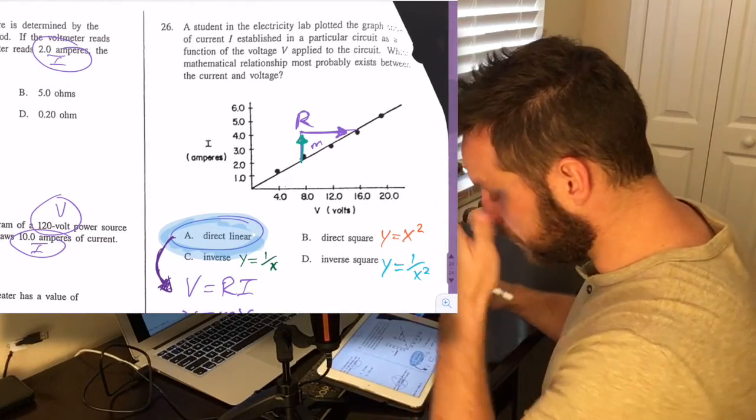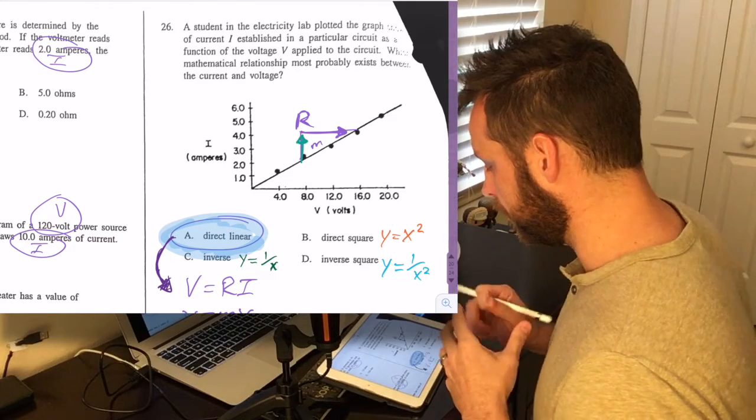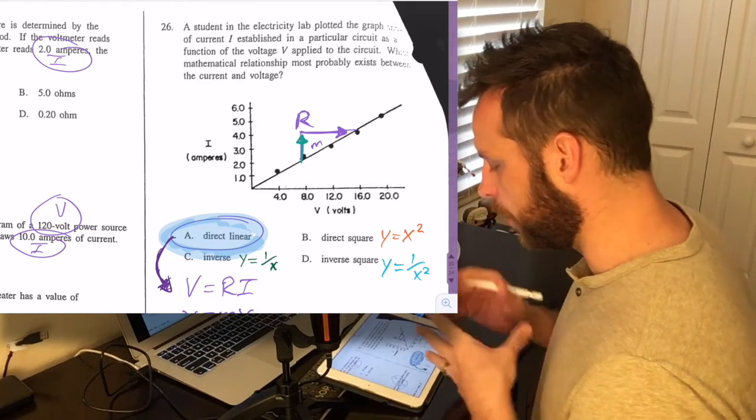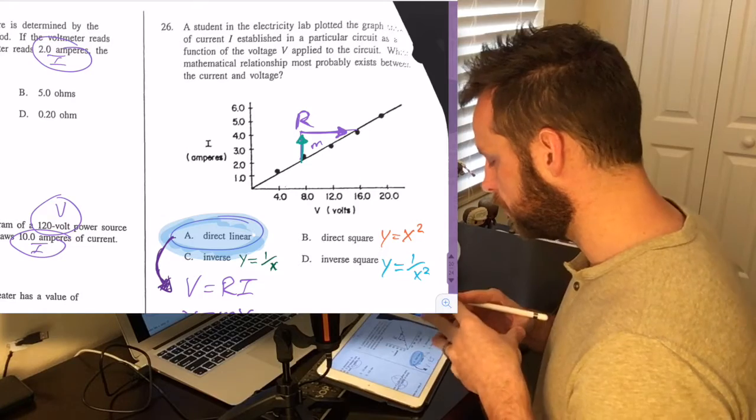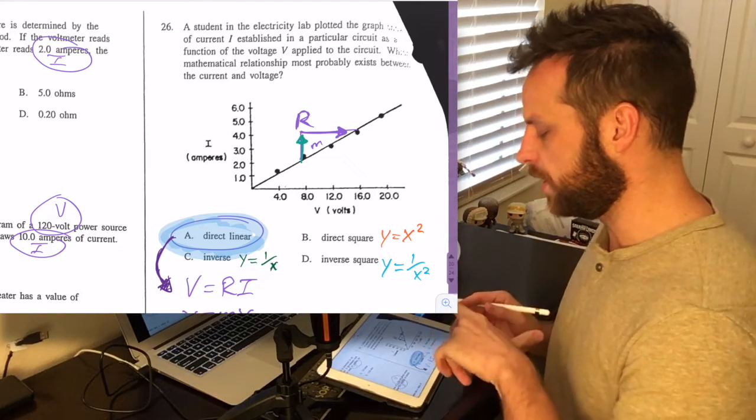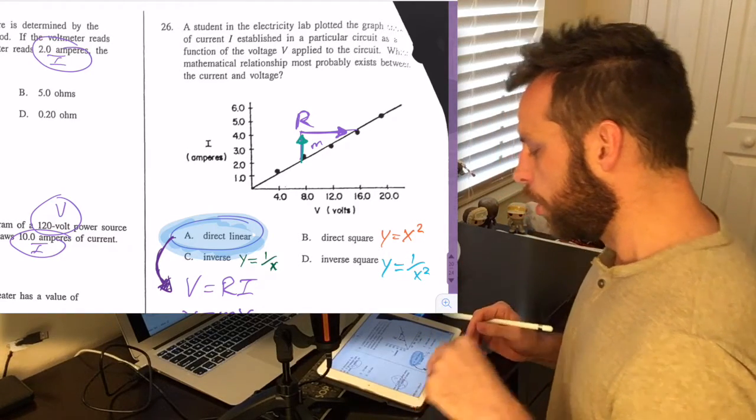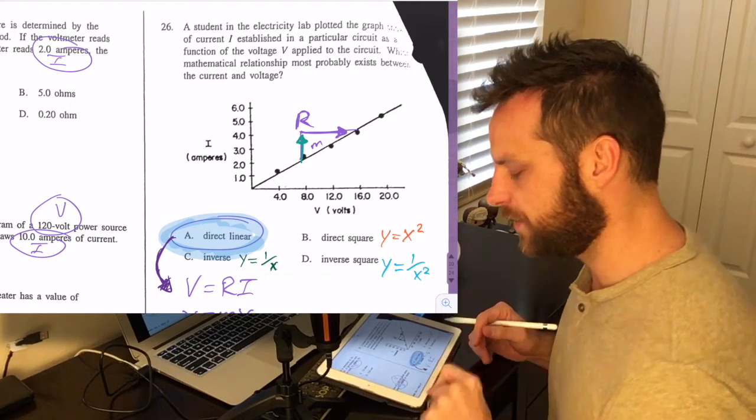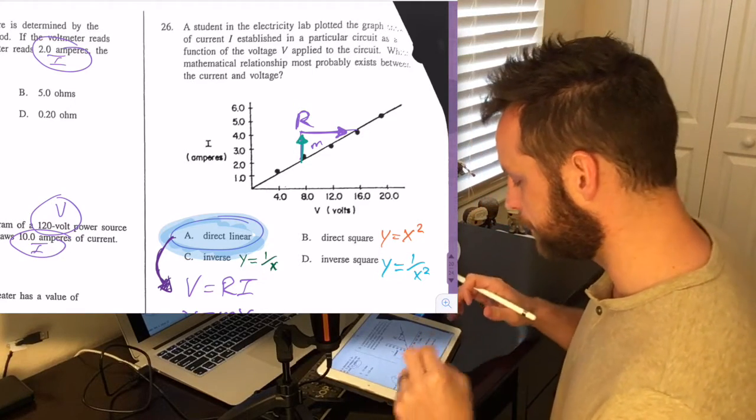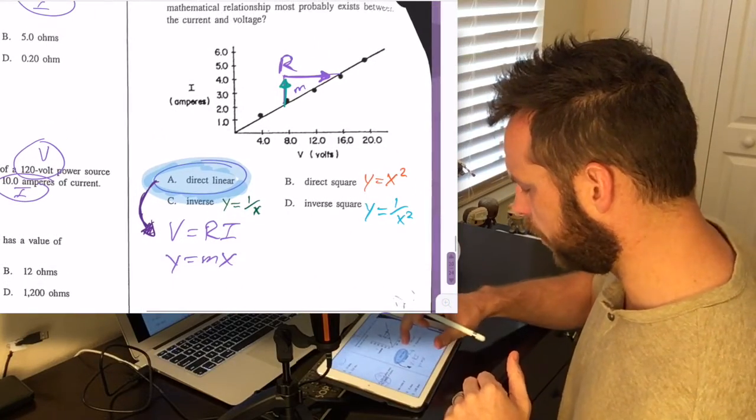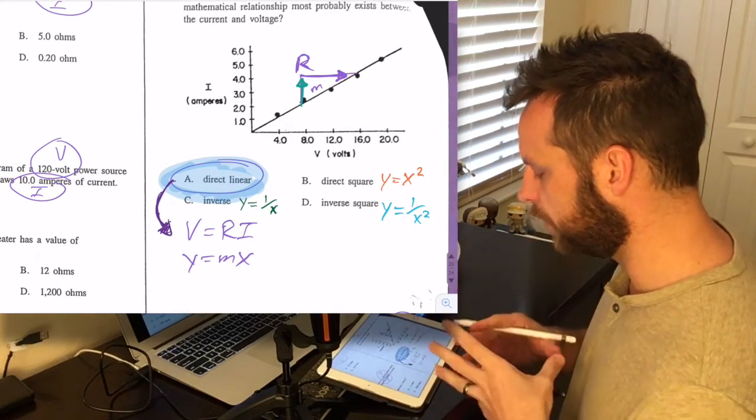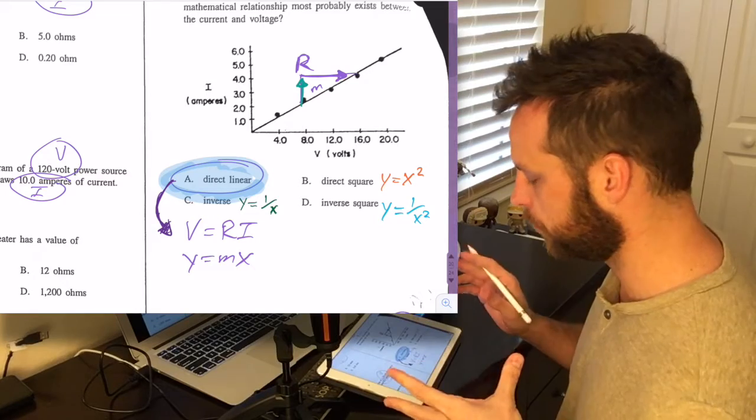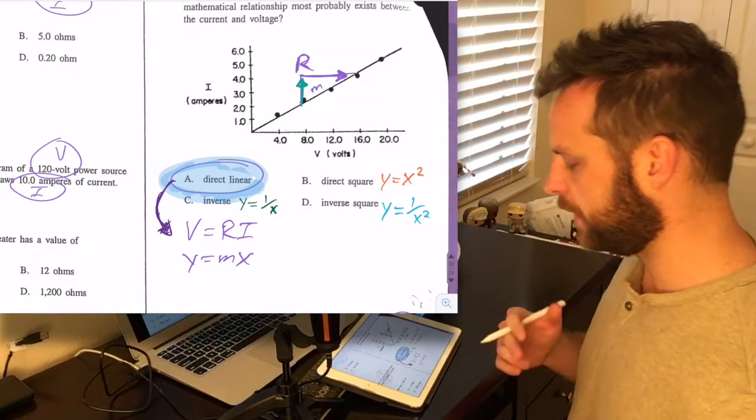Now in number 26, a student in an electricity lab plotted the graph below of current I established in a particular circuit as a function of voltage V applied to the circuit. Which mathematical relationship most probably exists between the current and voltage? And then our options are very mathematical: direct linear, inverse, direct square, inverse square. And I've written in what those things mean.